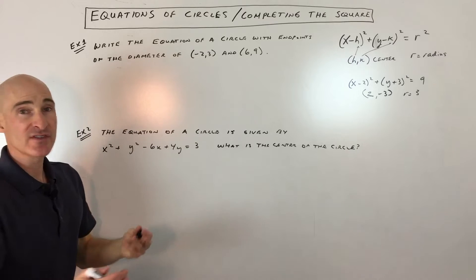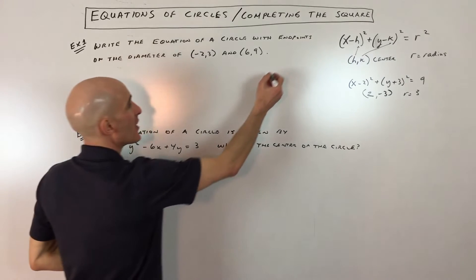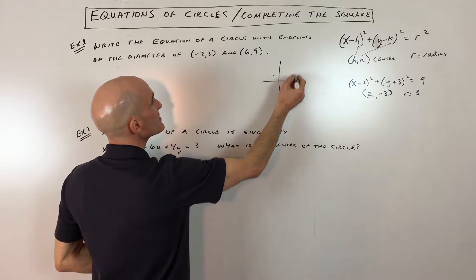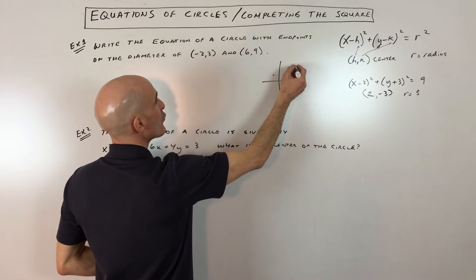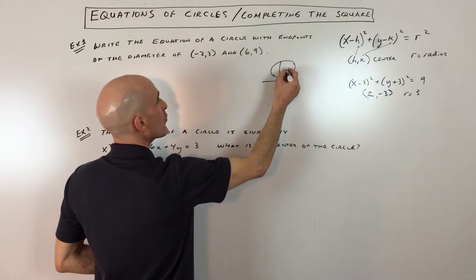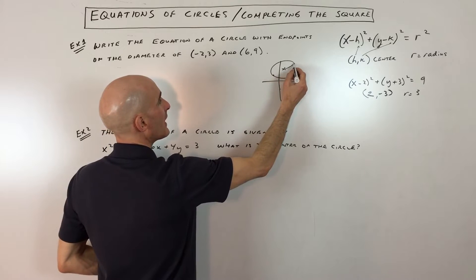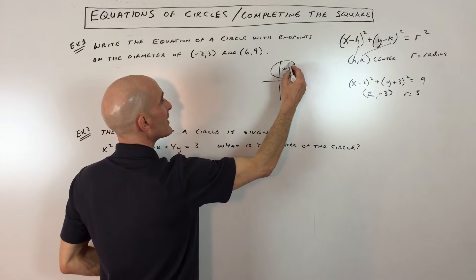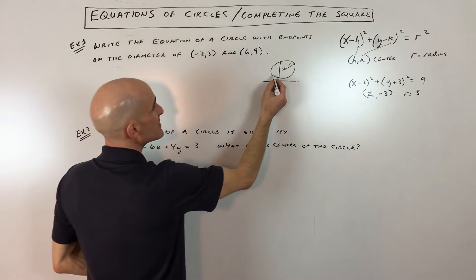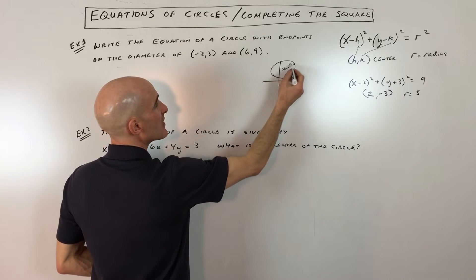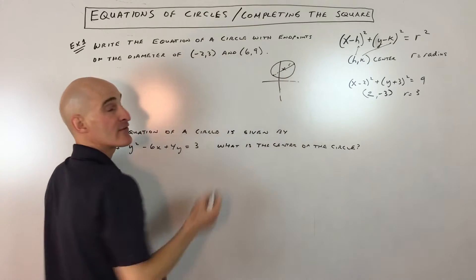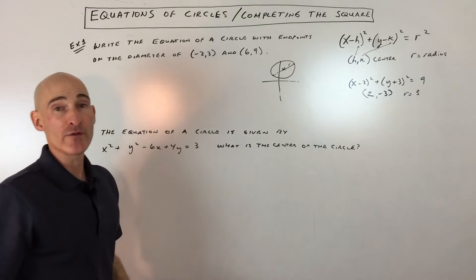You might want to draw a quick sketch. Negative two, three is somewhere here; six, nine is somewhere over here. The circle is going to look something like this. We're trying to find that center point and what the radius is. To find the center point, since these are the endpoints of the diameter, we're going to use our midpoint formula.